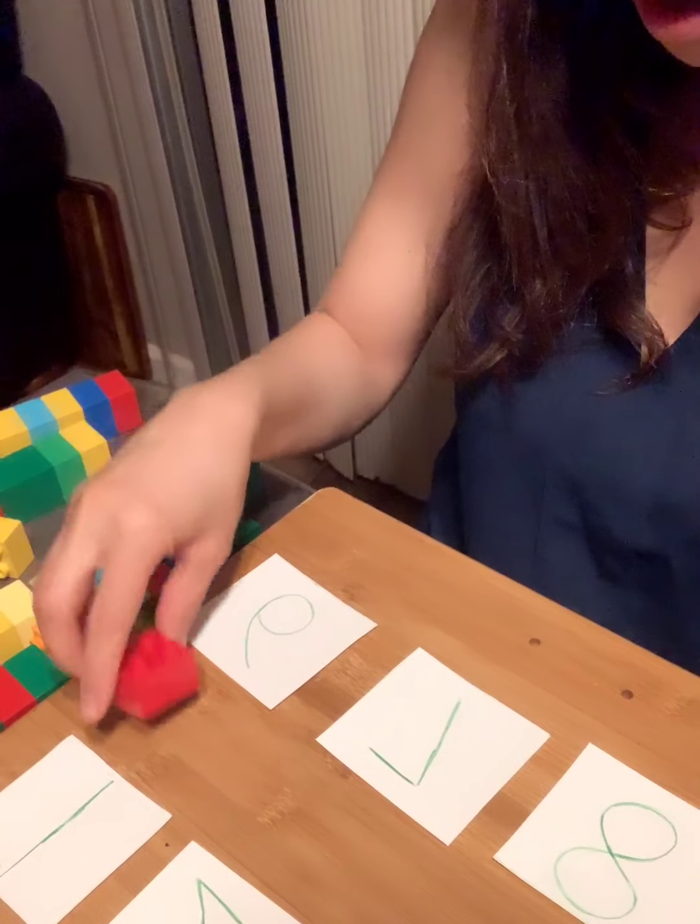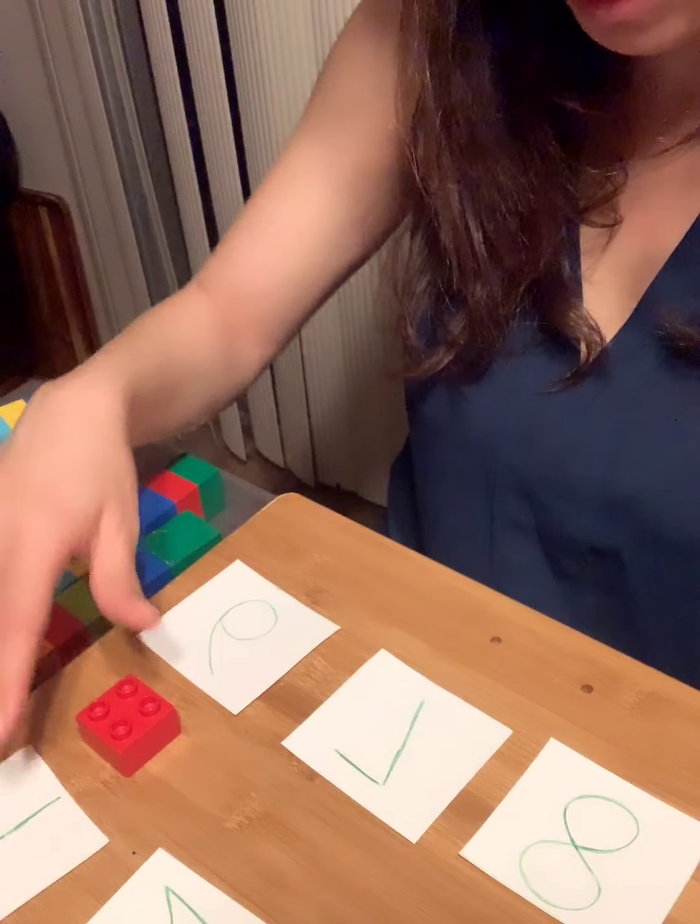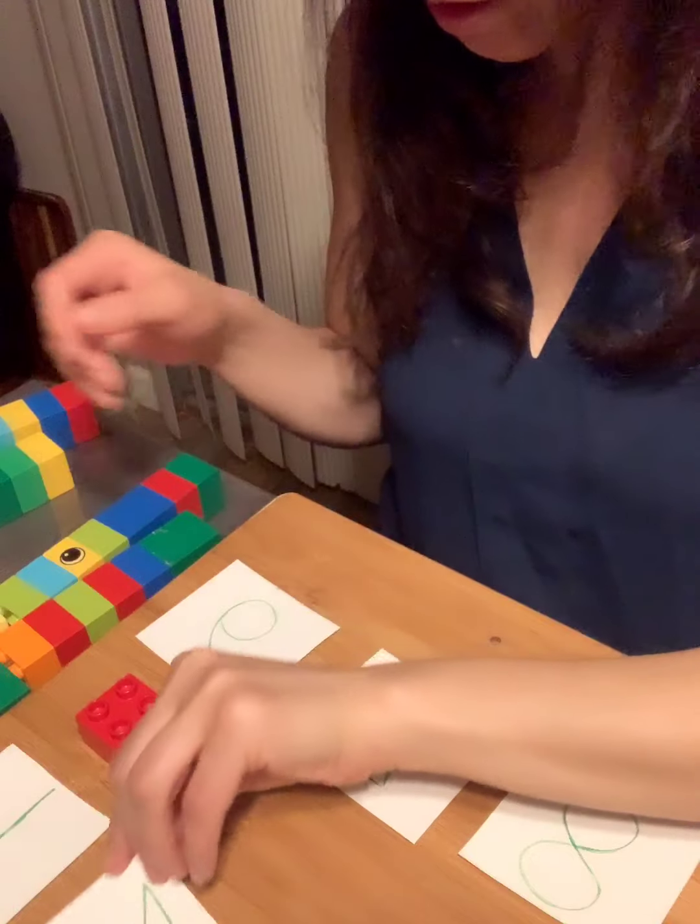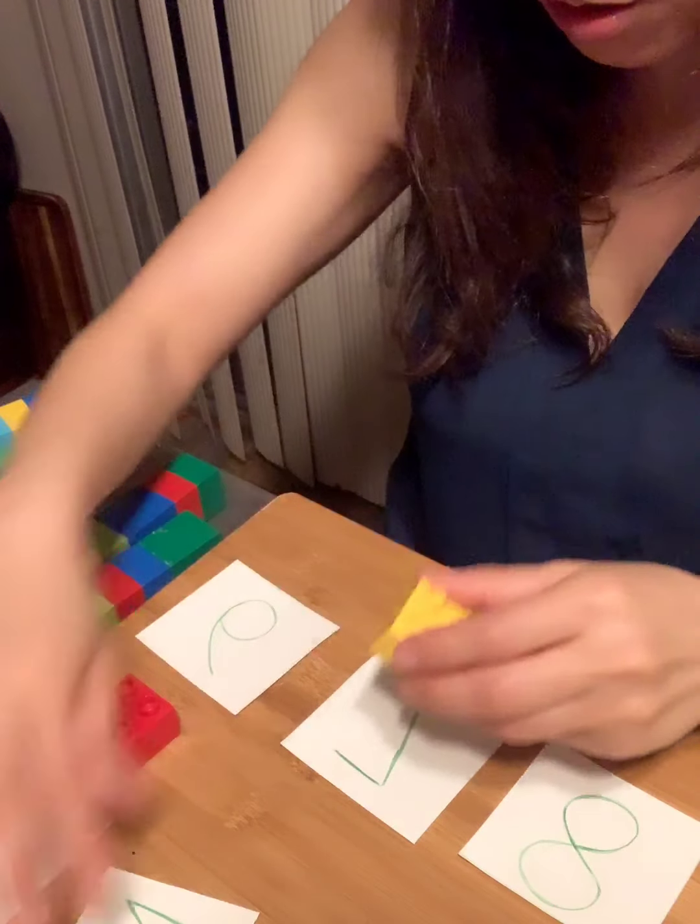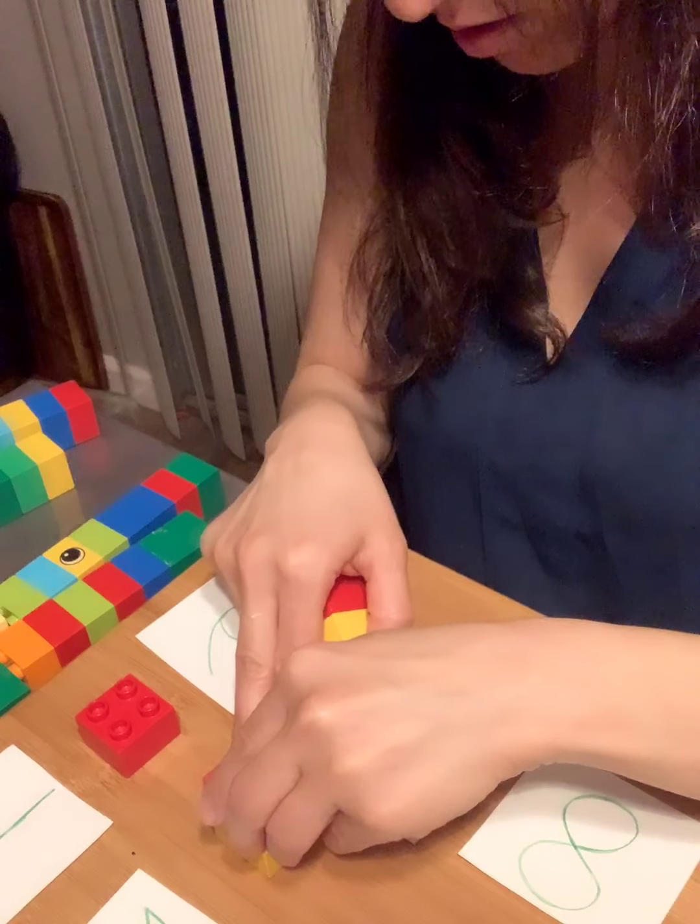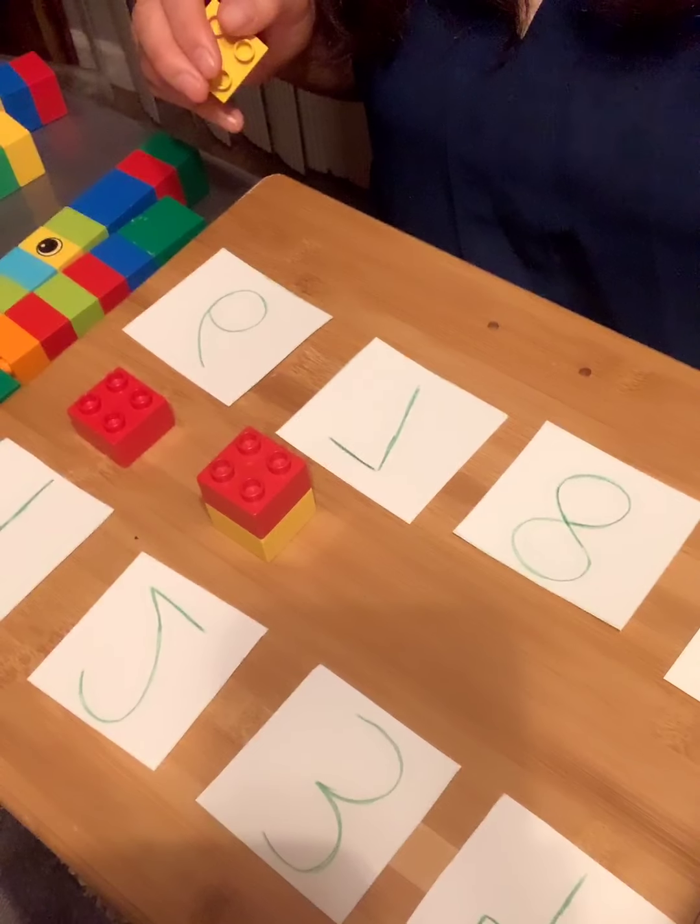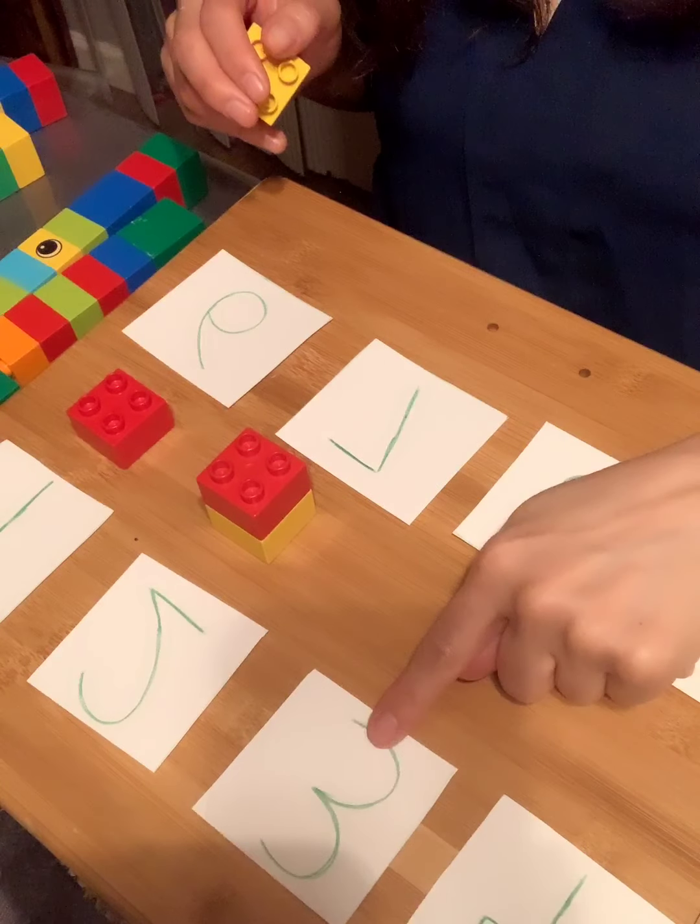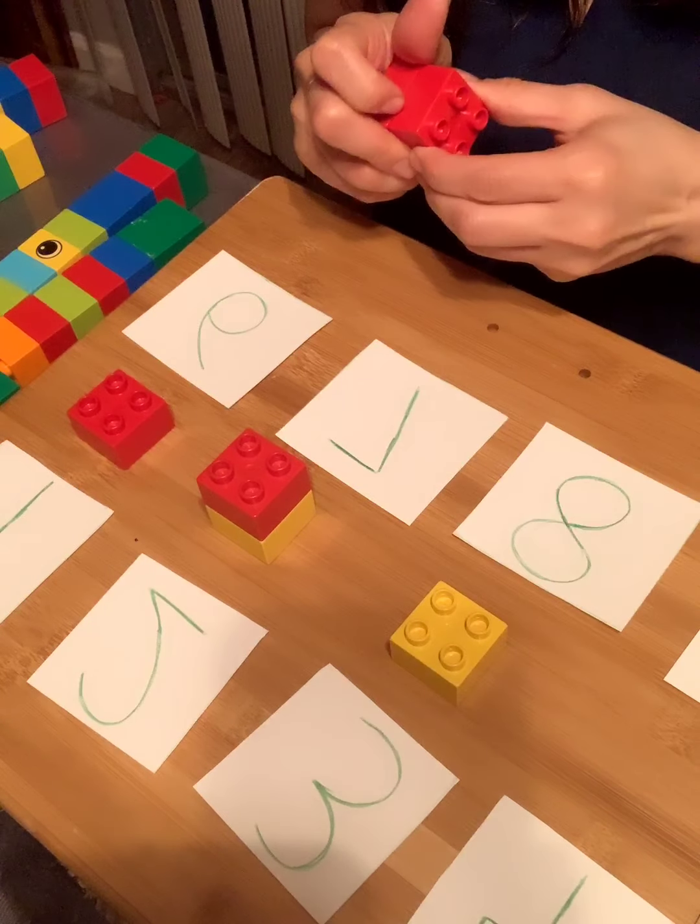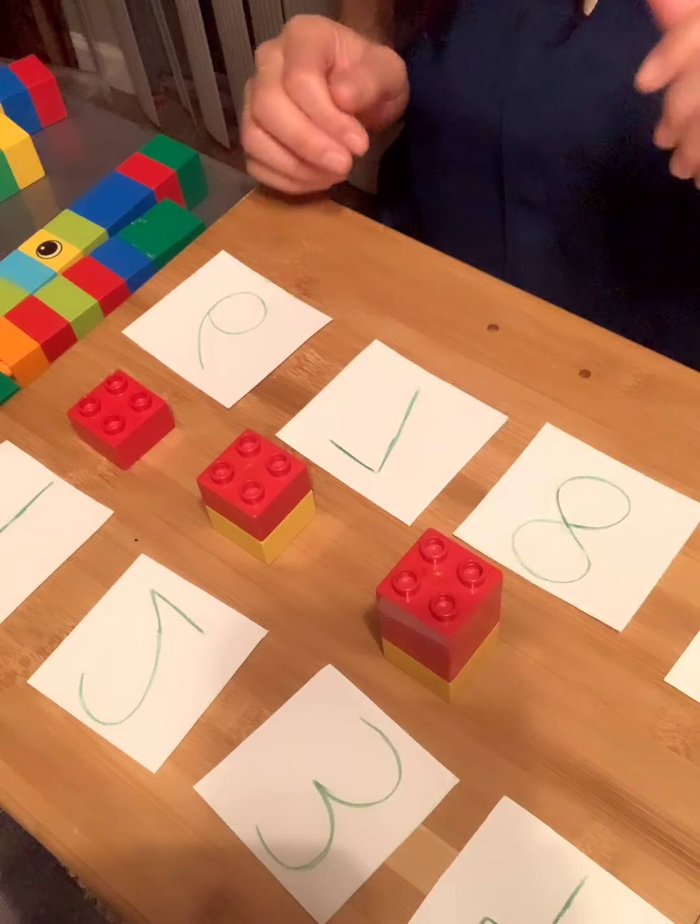I put one Lego. Second, the next one is number two and I need to put two Legos here. One, two. The next card is number three and I put one, two, and three Legos.